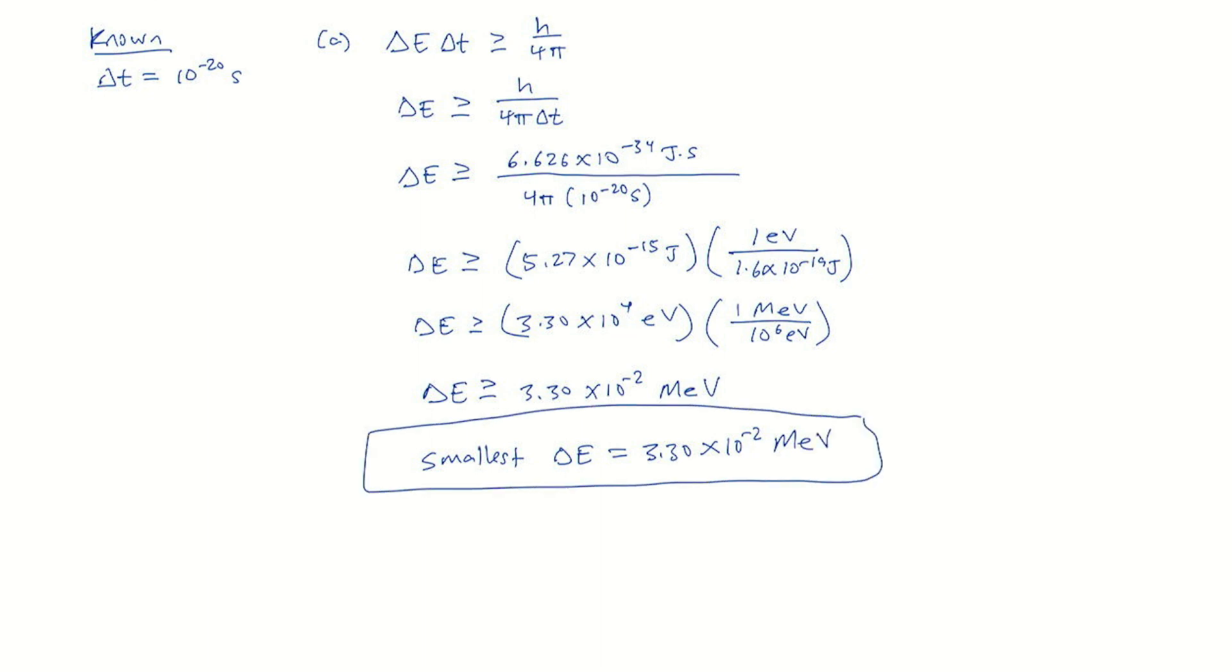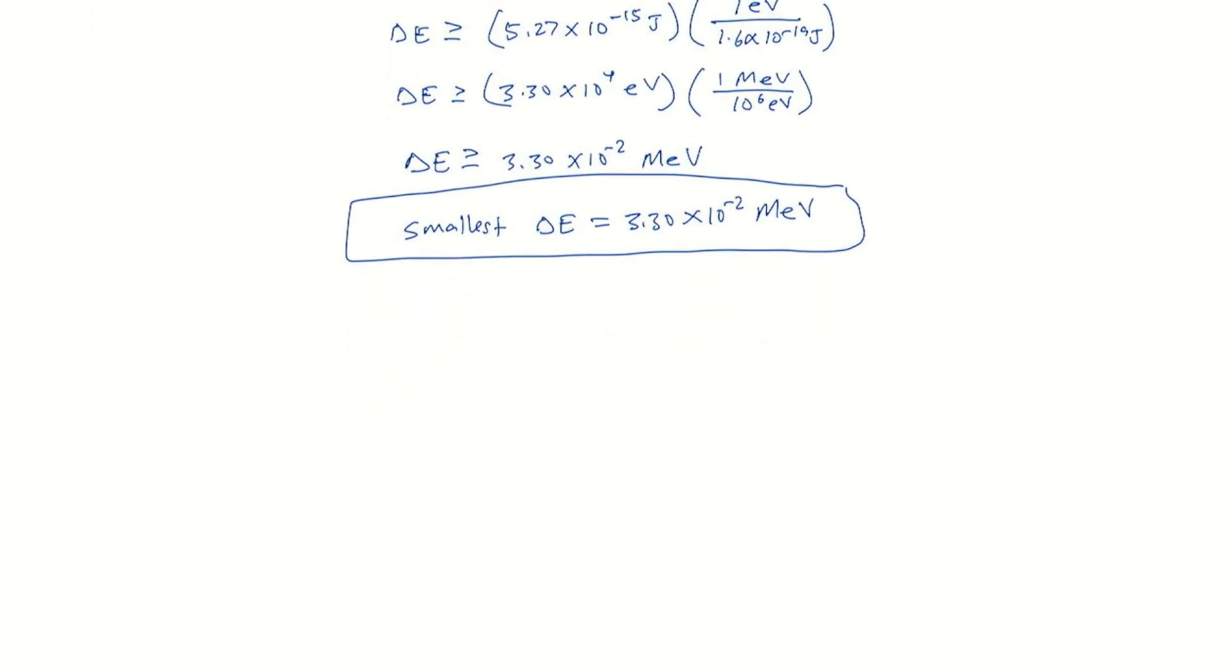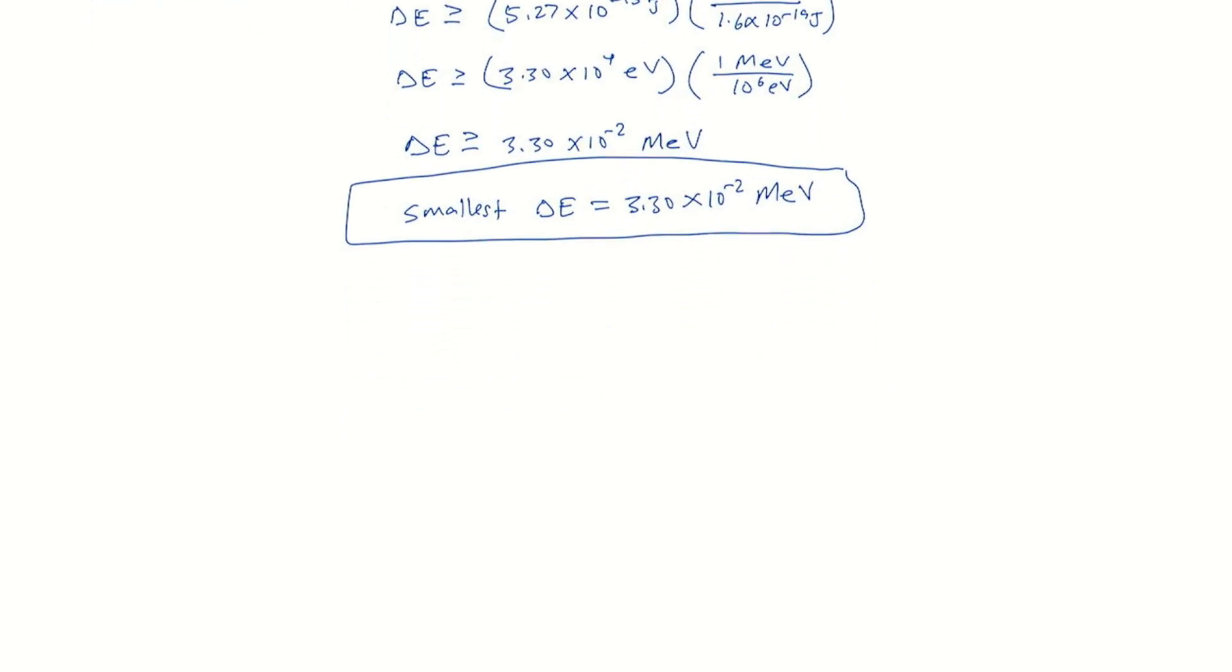Because the delta E is greater than or equal to that, the smallest one is equal to that. Now we're going to compare this to the rest energy of an electron.